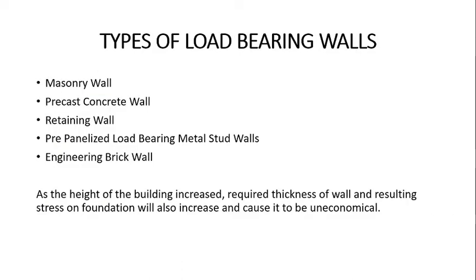Today we are going to learn about a few basic types of load bearing walls used in daily construction. These are: masonry walls, precast concrete walls, retaining walls, pre-panelized load bearing metal stud walls, and engineering brick walls. All of these types of load bearing walls become uneconomical if the height of the building is increased, because when the height increases, the load the walls must carry also increases. This results in greater wall thickness and puts stress on the foundation. Therefore, for high-rise buildings, we use a different type of structure to carry the load, which becomes more economical.